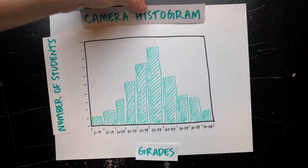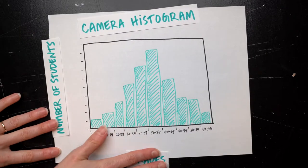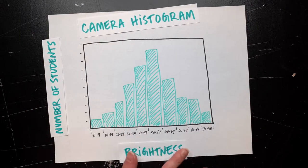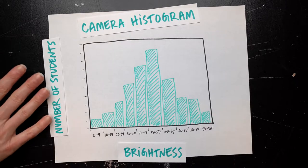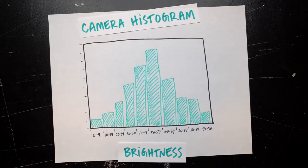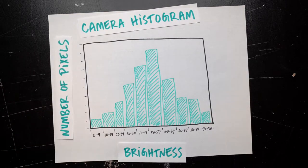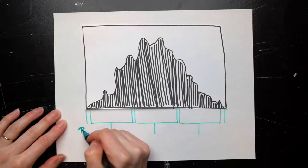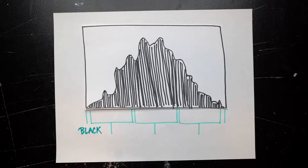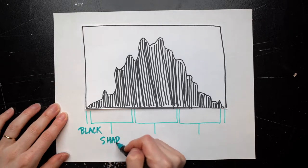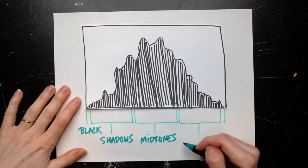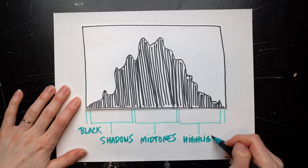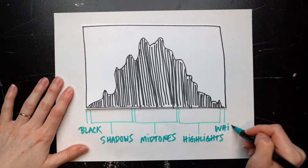The histogram on your camera doesn't measure grades from 0 to 100, but it measures brightness from 0 to 100, and instead of measuring how many students are at different levels, it's measuring how many pixels are at different levels of brightness. The very left edge shows how many pixels are pure black, the left side shows pixels in the shadows, the middle shows pixels in the midtones, the right side shows pixels in the highlights, and the very right edge shows how many pixels are pure white.